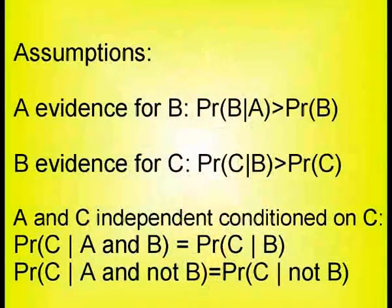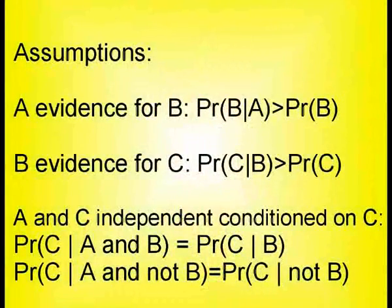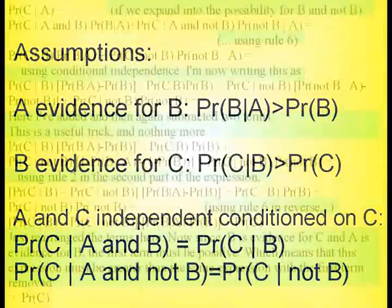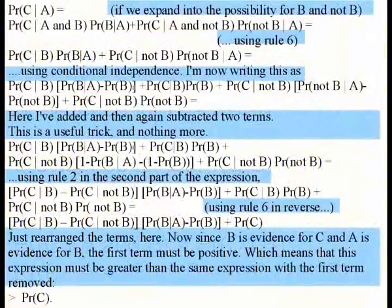So assume that A is evidence for B, that B is evidence for C, and that A and C are independent conditioned on B. If we've observed A, do we then have evidence for C? Yes we do, and here's the proof. If you want to, you can stop the presentation here to soak up the content of this slide.